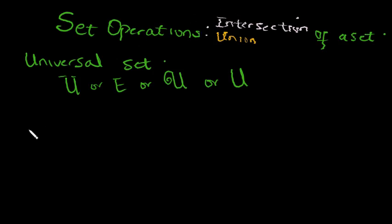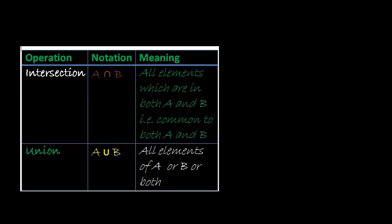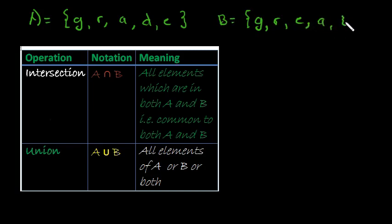So now the topic of the intersection and the union of a set. Let's say we have two sets A and B. Set A contains letters in GRAD as G, R, A, D, and E. And set B contains letters in GREAT as G, R, E, A, and T.